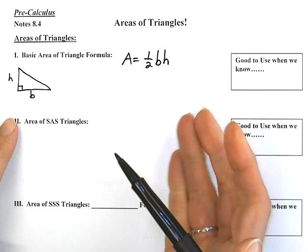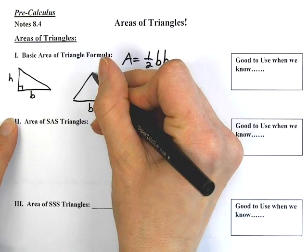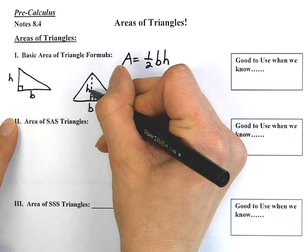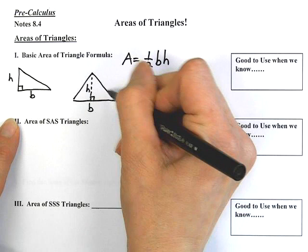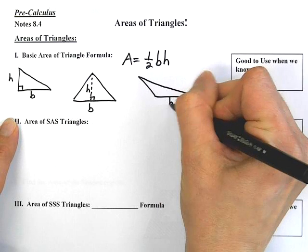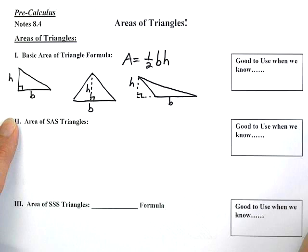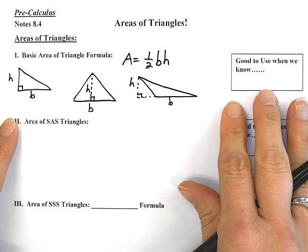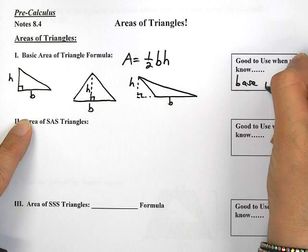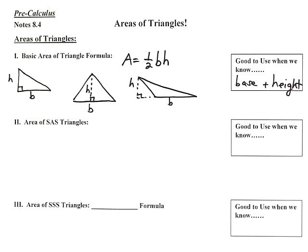a great formula to use would be 1 half times base times height. It could look a variety of ways. Maybe it's a triangle like this, where they tell you the base, and then inside you see a little dotted altitude, it's got to be perpendicular, and this would be the height. You could also use 1 half base times height. Or sometimes it's an obtuse triangle where it's like this, and you have the base, and then way outside here they'll show some dotted lines for the altitude, and that's the height. This is a great formula to use when we know the base and the height. But that's not very exciting, and that is certainly not pre-calculus.